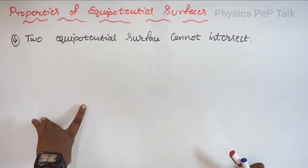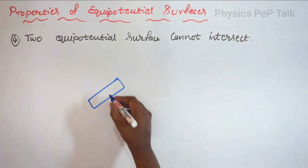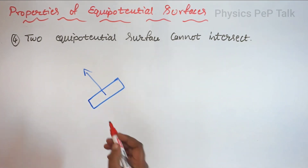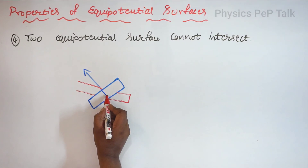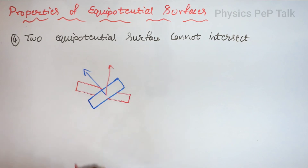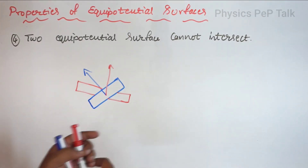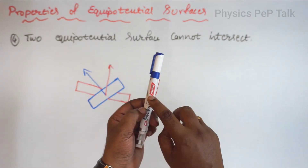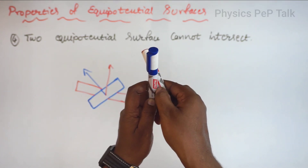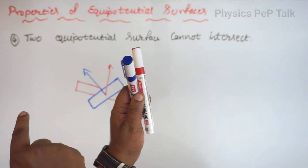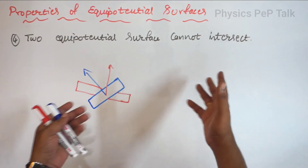Property number four: two equipotential surfaces cannot intersect. Consider one equipotential surface with its electric field directed perpendicularly outward. If I consider another equipotential surface overlapping exactly at a point of contact, that second surface must also have its electric field perpendicular to it at that point — pointing in a different direction. At the point of contact, the electric field would have two different directions simultaneously, which does not obey the second property. Because of this reason, two equipotential surfaces cannot intersect.